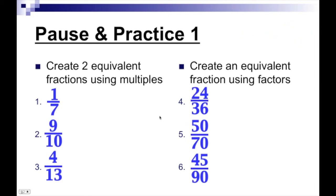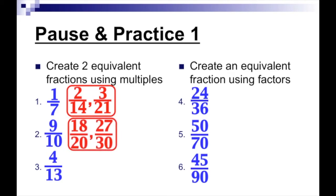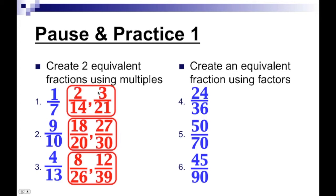Let's take a look at our answers. For the first three questions, we have to create two equivalent fractions using multiples — that means our numbers are going to be bigger. For one-seventh, we could get two over fourteen or three over twenty-one. For number two, eighteen over twenty or twenty-seven over thirty. For number three, eight over twenty-six or twelve over thirty-nine. It's important to know we could have used any number — your answers may vary.